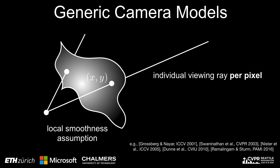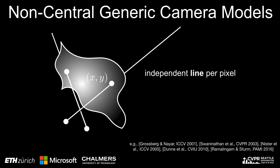The model shown here is a central model, with all viewing rays intersecting in a single center of projection. However, non-central models are also possible. The number of parameters in both central and non-central models is roughly linear in the number of pixels.